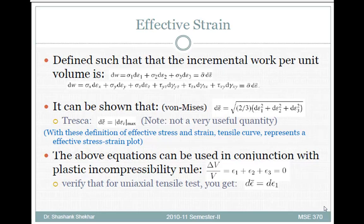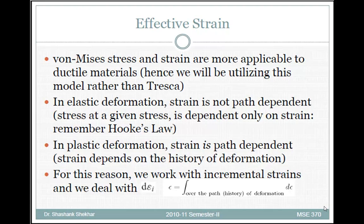Effective strain can be found using the corresponding formulas; for the von Mises case, ε̄ is found using the incremental form. The plastic incompressibility rule means that ΔV = 0, so ΔV/V = ε₁ + ε₂ + ε₃ = 0, meaning the sum of the principal strains is always zero.